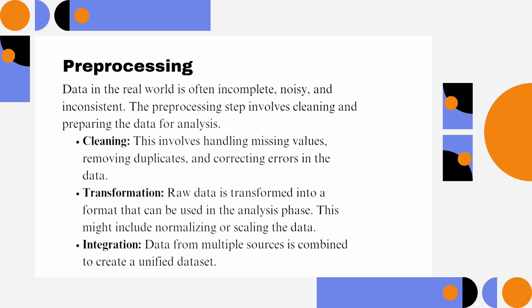Transformation: Raw data is transformed into a format that can be used in the analysis phase. This might include normalizing or scaling the data. Integration: Data from multiple sources is combined to create a unified dataset.